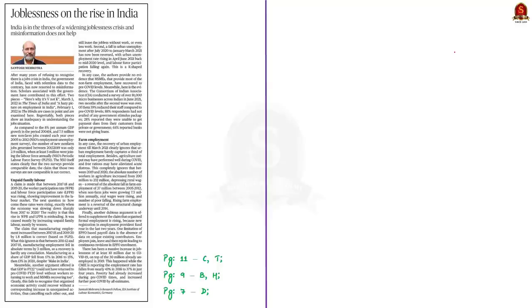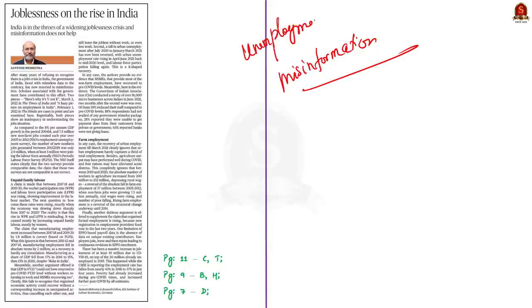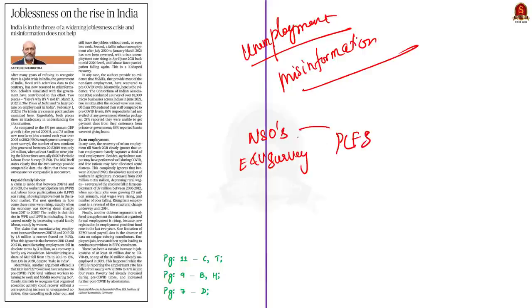The next news article talks about unemployment. According to the author, after years of refusing to acknowledge India's job problem, the government has now resorted to misinformation in the face of increasing contrary evidence, supported by government-affiliated academics. The author discusses NSO's Employment Unemployment Survey and NSO's Periodic Labour Force Survey, along with two different news articles about unemployment. Both essays show an inadequacy in understanding the job situation. In this context, let us go through some important facts from the article, with the relevant syllabus given here for reference.